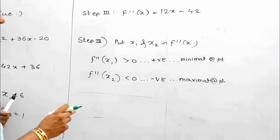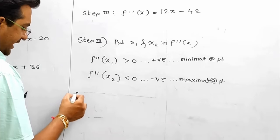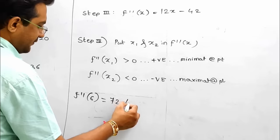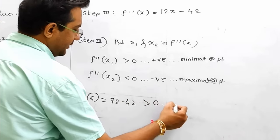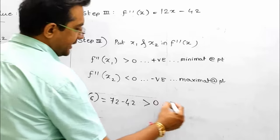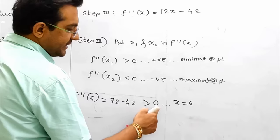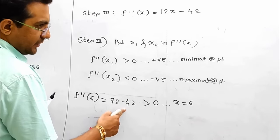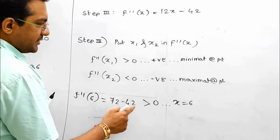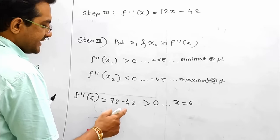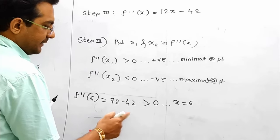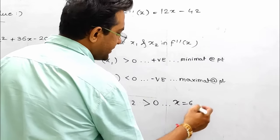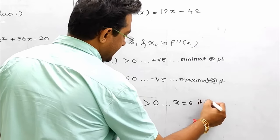Continuing with step number 4: when I put f''(6), I get 72 - 42, which is greater than 0. Therefore at x = 6, it is positive, meaning f''(6) is positive. Since it is a positive number greater than 0, that means it is minima. At x = 6, it is minimum.